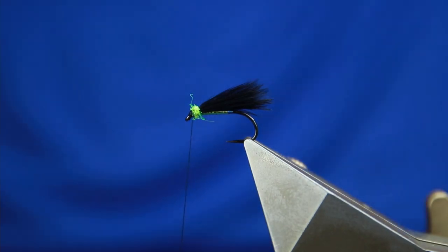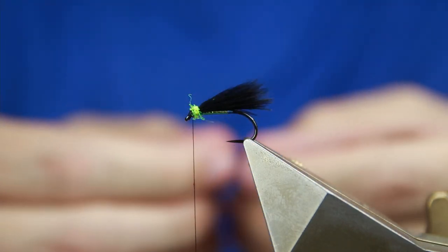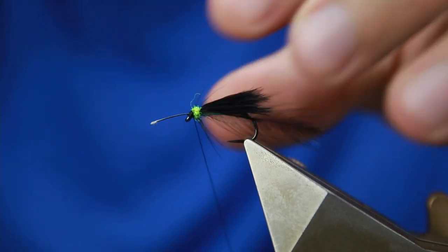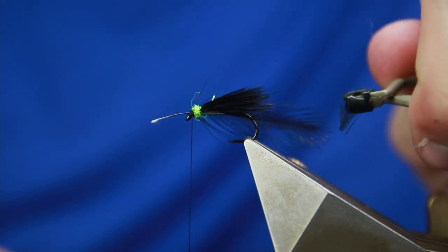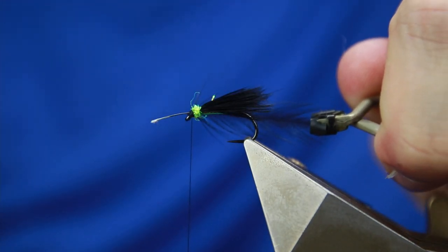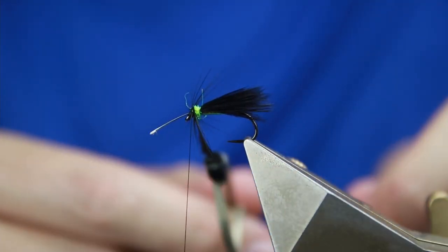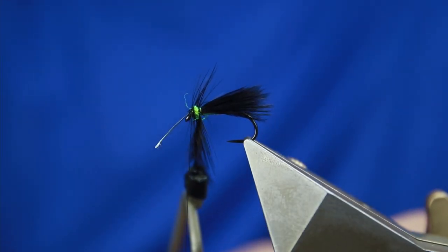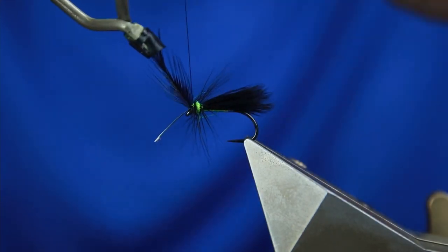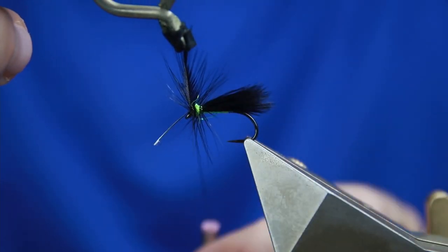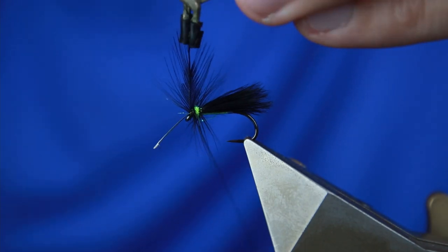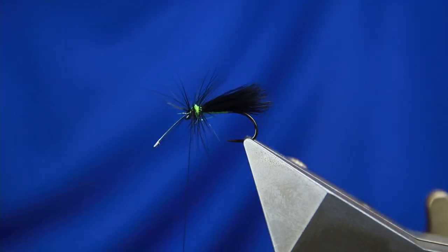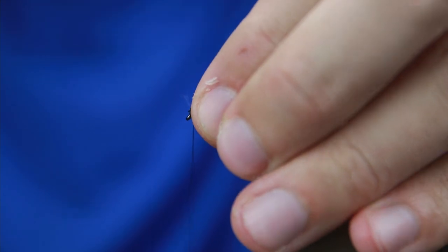And then just take a black hackle. I like a hen for this, but you could use a cock. You don't have to be fussy here. Catch that in, a couple of turns. Take some hackle pliers, and then just two turns. And I just bring it back up the front a little bit. And as long as it's in tight, take away the hackle. Pull everything back, bar the stalk.